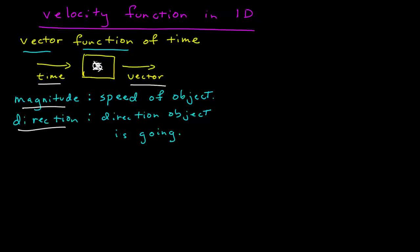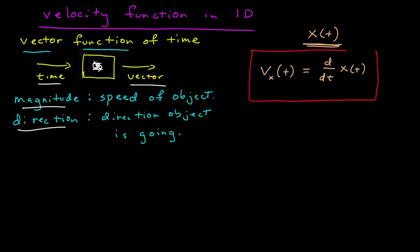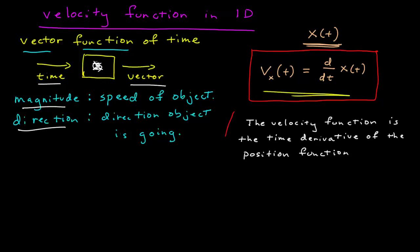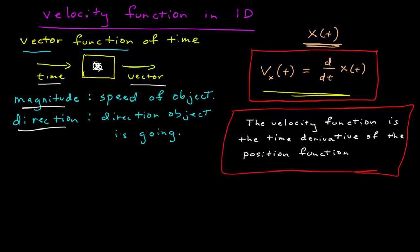How do we go about getting that? Given a position function of time, x of t, the velocity function v_x of time is equal to the time derivative of the position function of time. This is a fundamental definition. It's so important that it's best remembered in words rather than equations, because the notation can change in 3D and other contexts. But the actual definition is the same in words: the velocity function is the time derivative of the position function. Regardless of the dimension you're in or the axis you're on, this statement is always true.